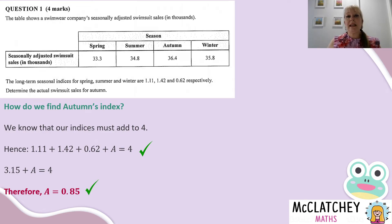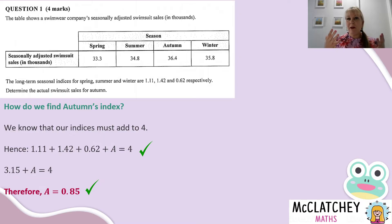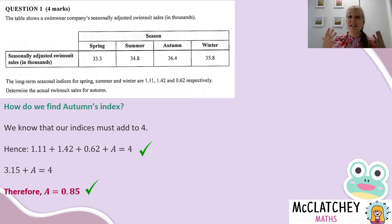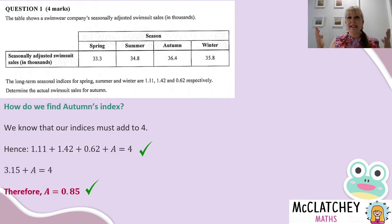This is an important thing to remember — it's not on a formula sheet anywhere. You just need to remember that your seasonal indices for four quarters of a year, four seasons in a year, will always add to four.